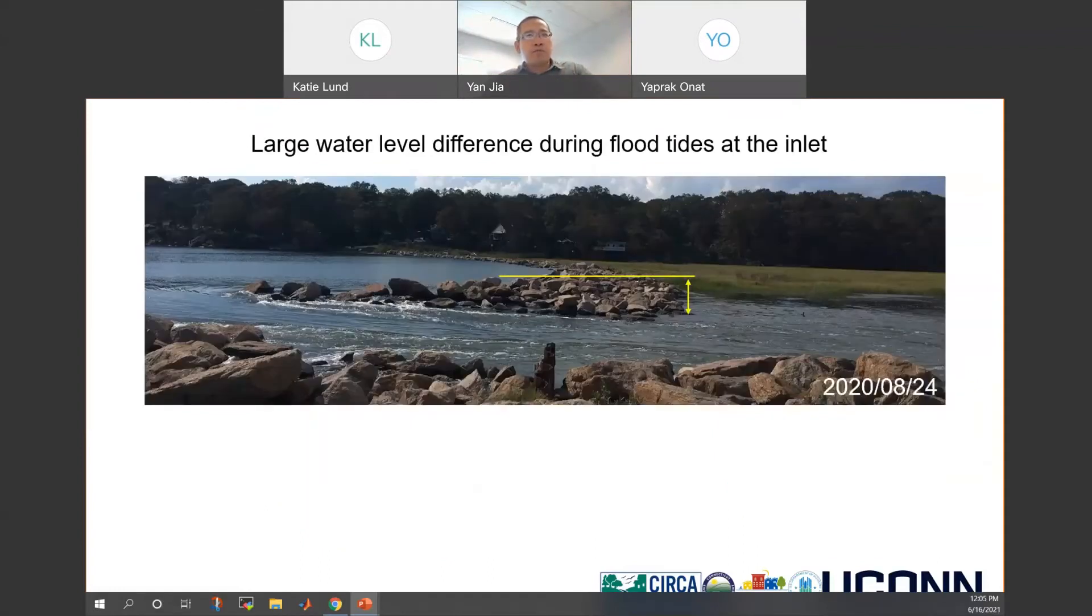Here are some field pictures. These pictures show flooding tidal conditions last summer. You can see at the left side is the open water, the right side is the salt marsh. There's a sharp contrast of the water levels. Also, you can tell the current entering through the inlet is very strong. So the main question I want to ask is how does the inlet impact the tides in this salt marsh system?